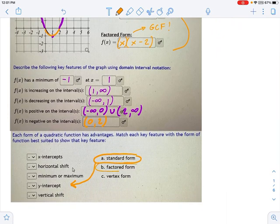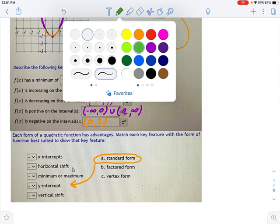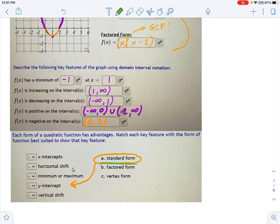Factored form is very good for showing you the x-intercepts. They just sort of pop out at you in factored form. And we've gone over this in class before.